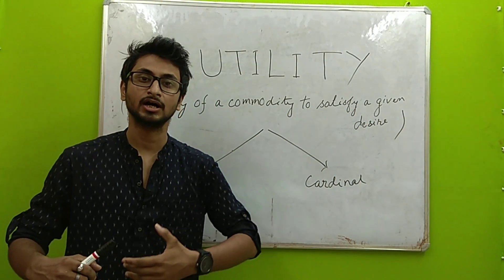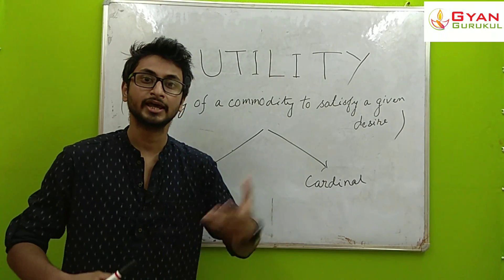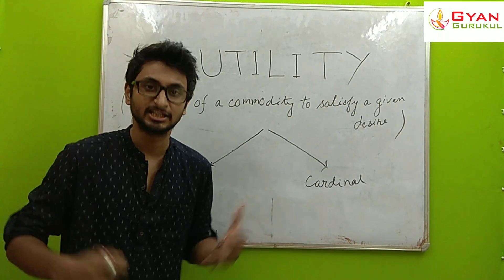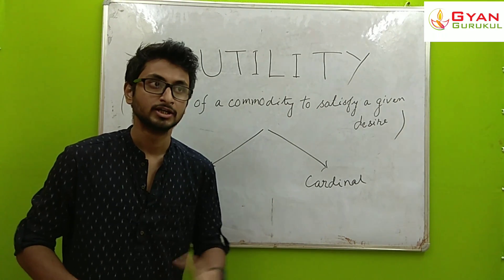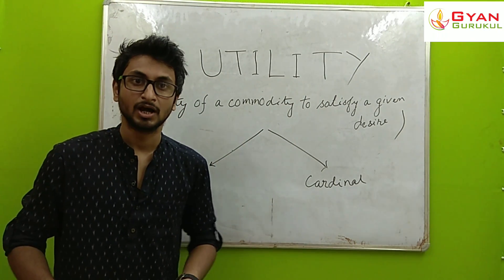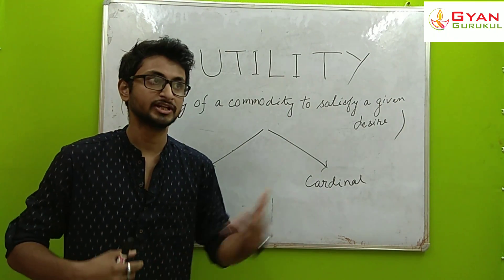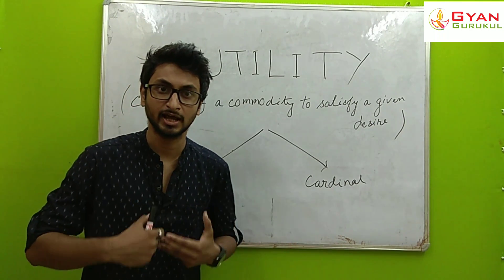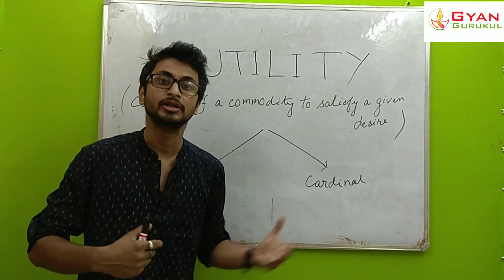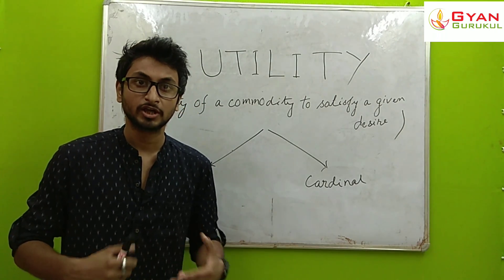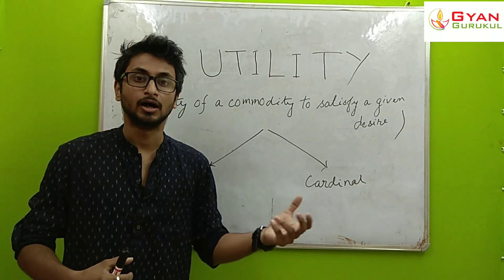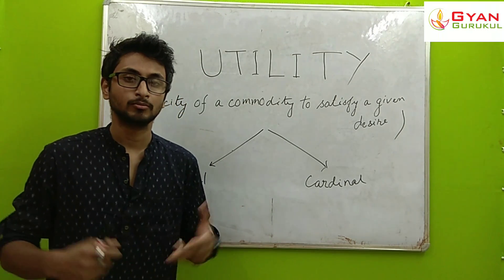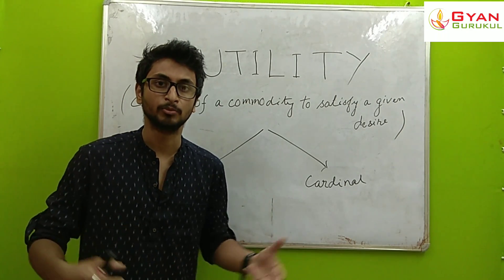If we consume a commodity, we can satisfy our desire with that commodity. For example, if we consume food, the food satisfies our hunger. So a commodity has utility — it satisfies a given desire.